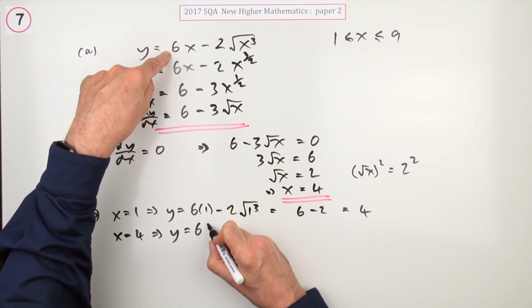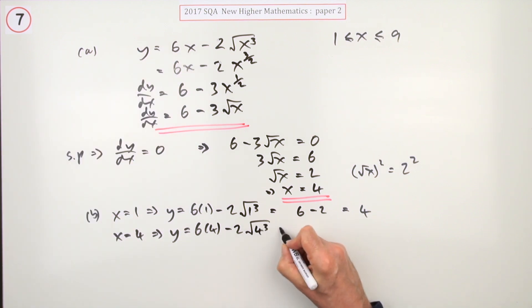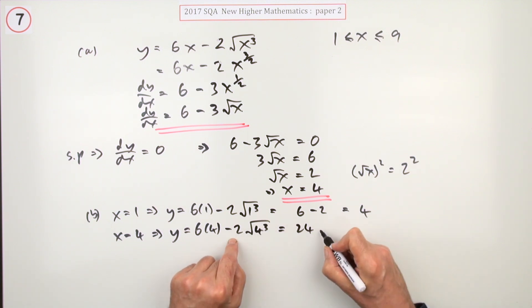Next contender, x equals 4. So 6 times 4 minus 2 times the square root of 4 cubed. Well, 6 fours are 24. Now the square root of 4 cubed, you're better off doing the square first. Square root of 4 is 2, 2 cubed is 8, double that is 16. So minus 16 gives me an 8 for that value.